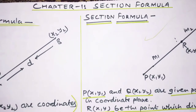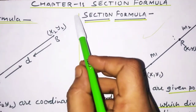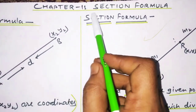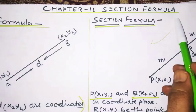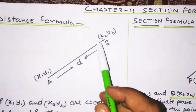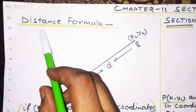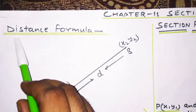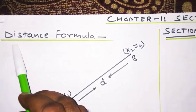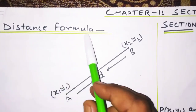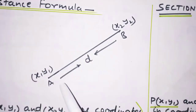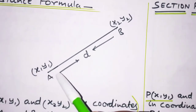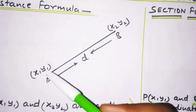Hello students, aaj haam start karayenge chapter 11 which name is Section Formula. In this chapter first we will learn about distance formula. What is distance formula? In previous classes we already read about distance formula.